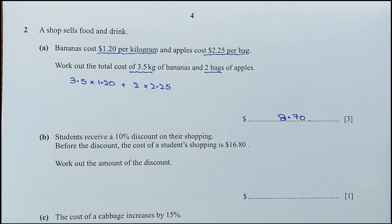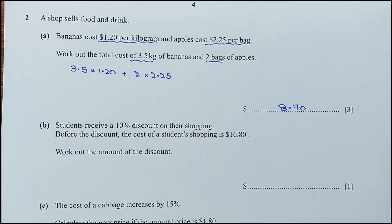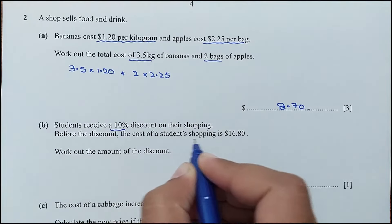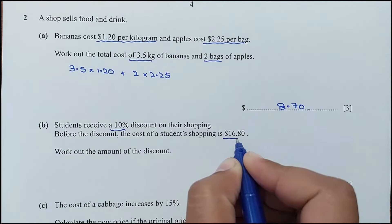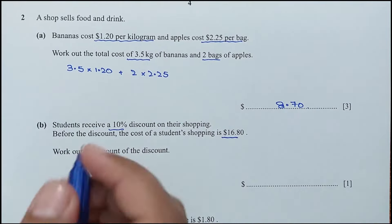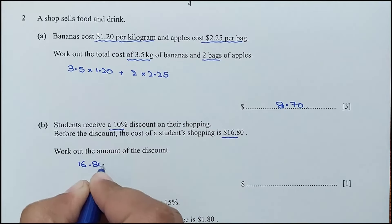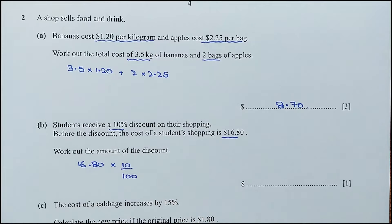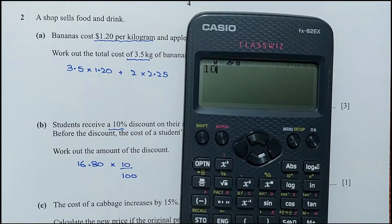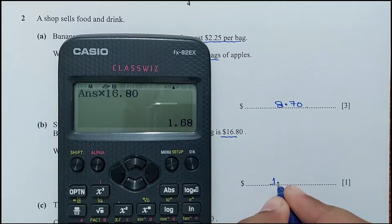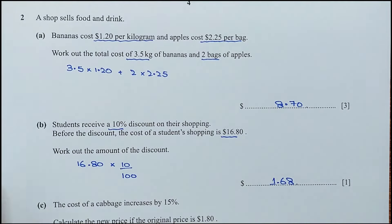For part B, students receive a 10% discount. Before the discount the cost is $16.80. Work out the discount amount. 10% of $16.80 is $1.68, so the discount amount is $1.68.